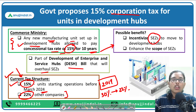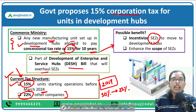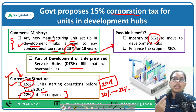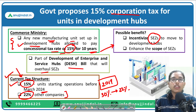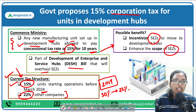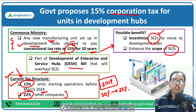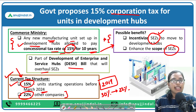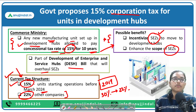SEZs are being incentivized to consider moving from the SEZ framework to the new development hub framework. There are lots of compliances involved in such a change. Secondly, it will enhance the scope and scale — under the DESH Bill there are lots of incentives and benefits for manufacturing hubs and export-oriented companies. The key objective is to incentivize SEZs to register themselves as development hubs as soon as possible.